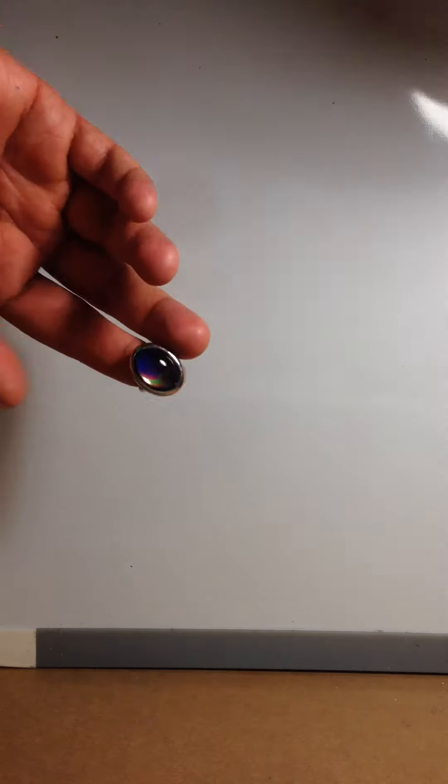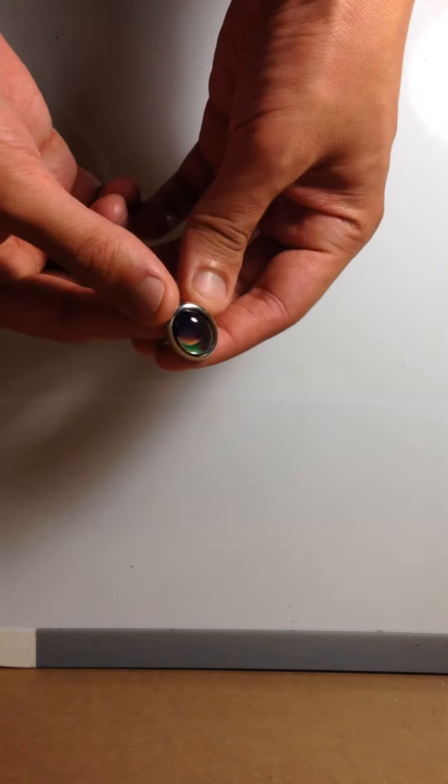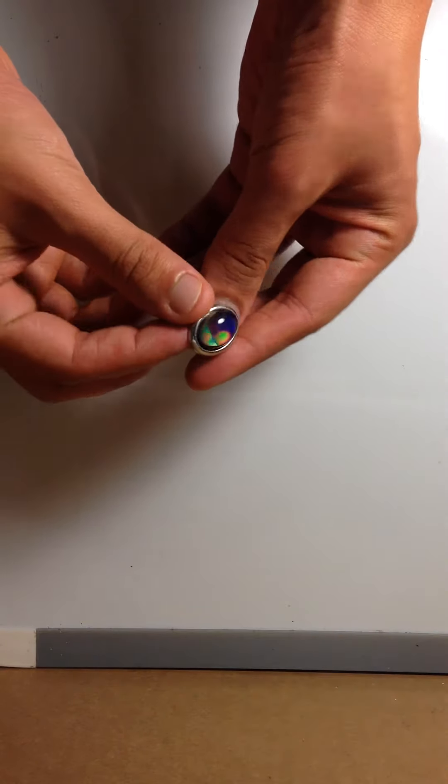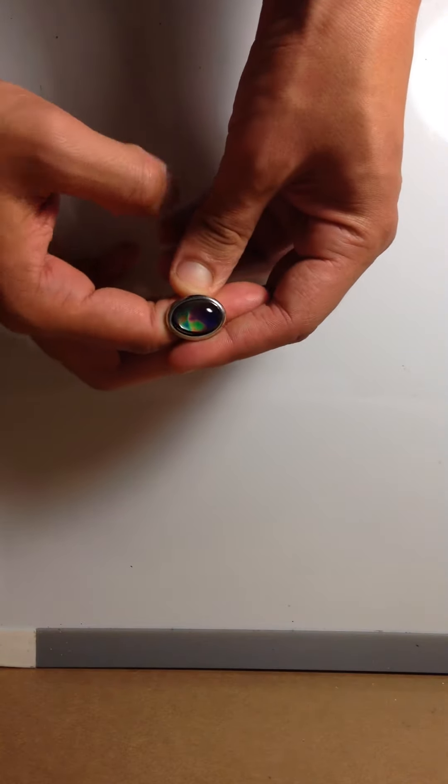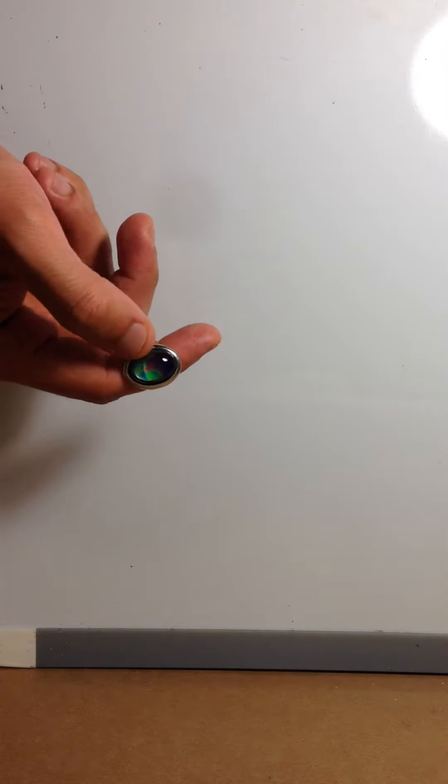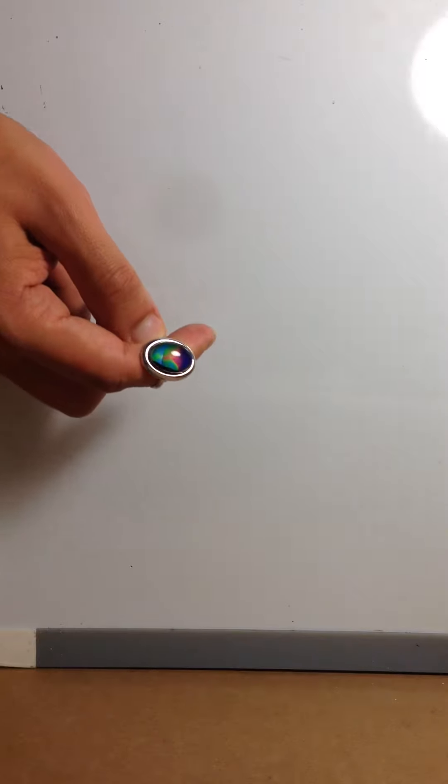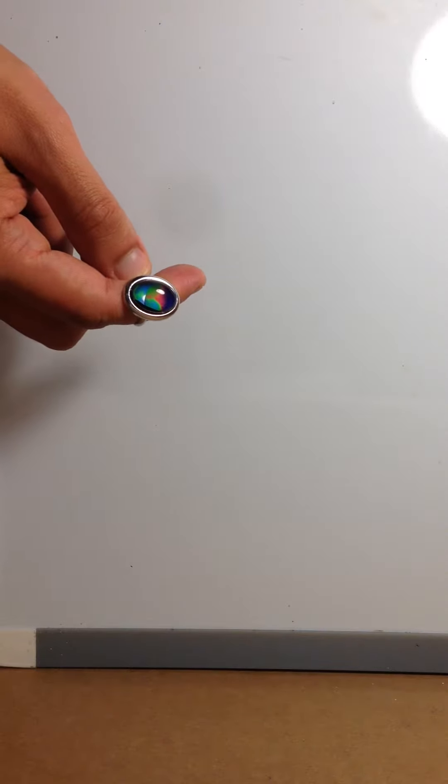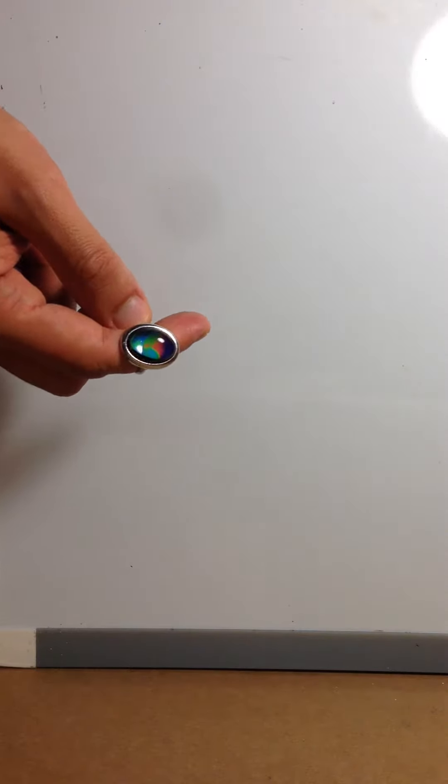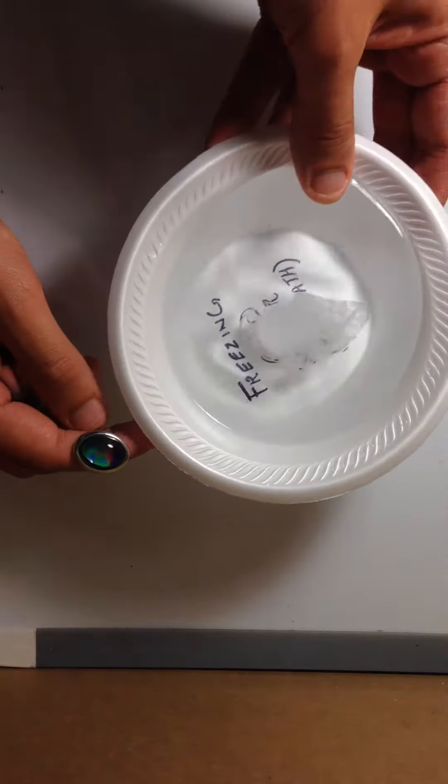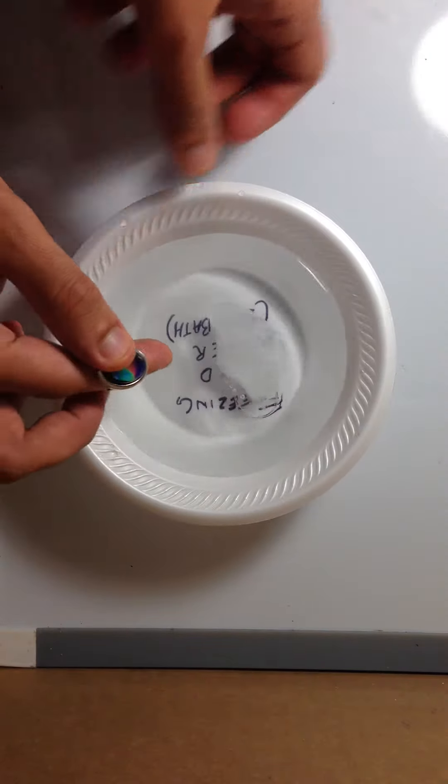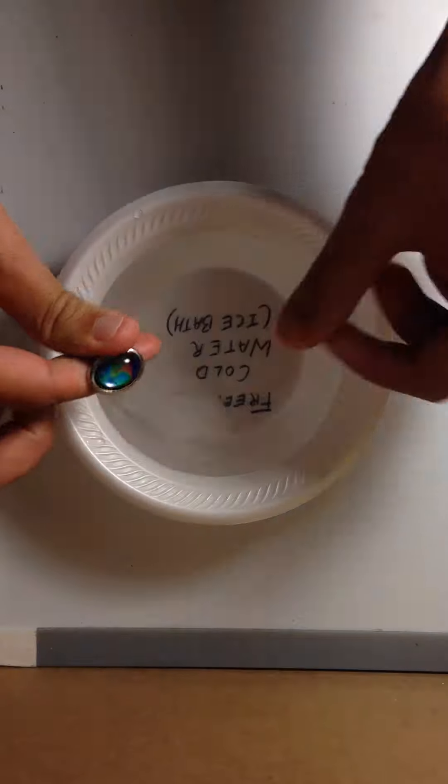There was actually no reason to believe that your mood could be decided based on this ring. But as you can see, the liquid crystals here, right now at normal human skin temperature, are a shade of greenish-blue and sort of purple. Let's see what happens when I put it in a freezing cold ice bath.